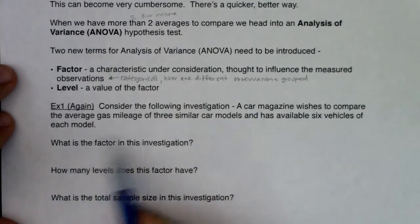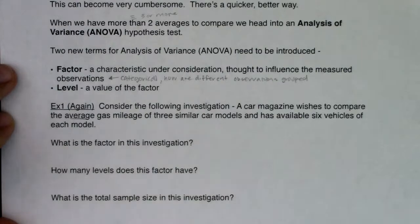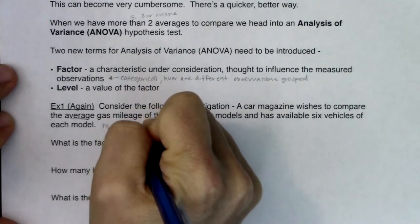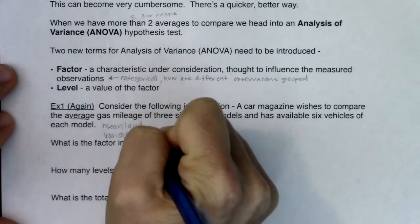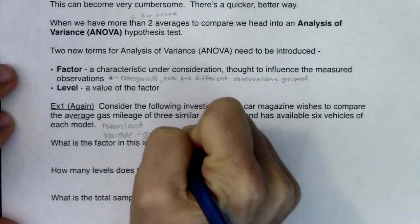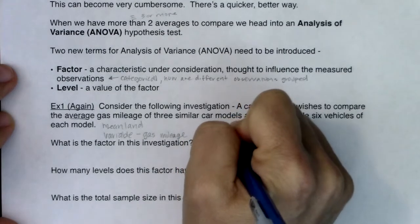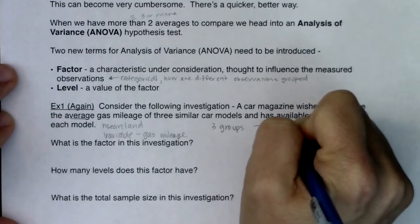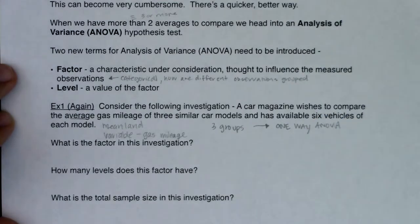So we're back here, we're back on our same setup. I want to just point out, we know we're in mean land. So we definitely know we're in mean land. Our variable this time out is gas mileage, that's a numerical variable and it should be. Anytime you have a numerical variable you're looking at averages, and this time out you have three groups. So that's how you know you're going to run a one-way ANOVA test. And with that, let's pick up some of our new vocab terms.